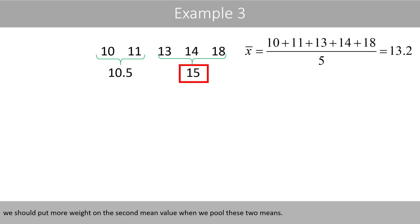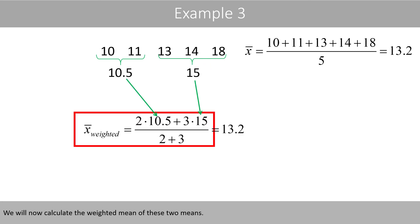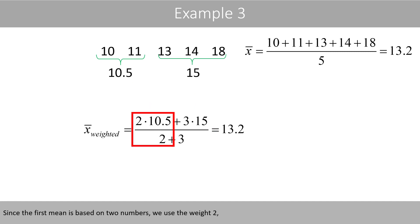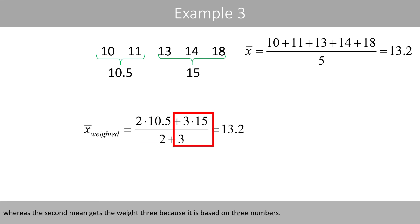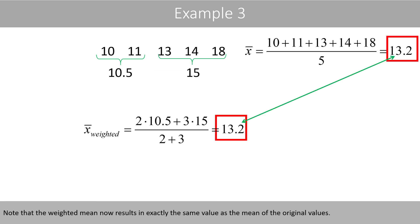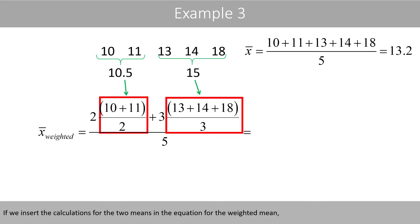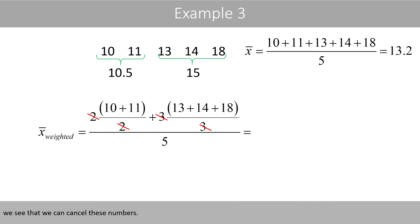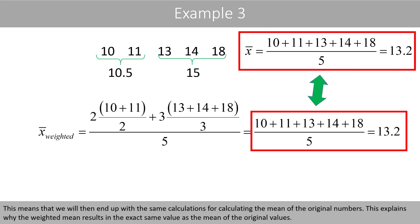We should put more weight on the second mean value when we pool these two means. Since the first mean is based on two numbers, we use the weight 2, whereas the second mean gets the weight 3 because it is based on three numbers. Note that the weighted mean now results in exactly the same value as the mean of the original values. If we insert the calculations for the two means in the equation for the weighted mean, we see that we can cancel these numbers, meaning we end up with the same calculation as the mean of the original numbers. This explains why the weighted mean results in the exact same value as the mean of the original values.